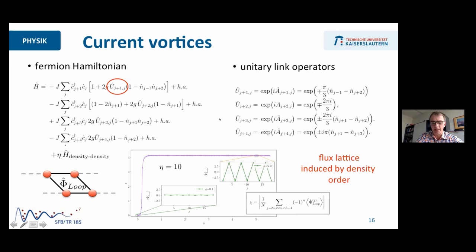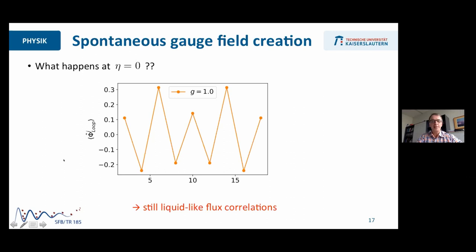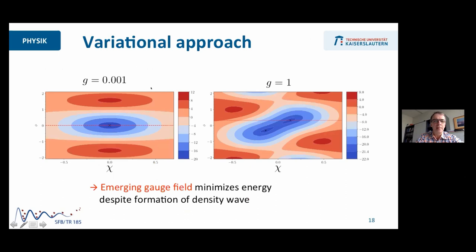Now you could ask the question, what happens if we artificially switch off this density-density interactions? So what happens if eta is equal to zero? The surprising thing is that we still observe a staggered magnetic flux in this lattice. So this means that this gauge field is actually spontaneously created. The reason for this spontaneous creation of the gauge field can be seen if you look at a simple variational Gutzwiller approach and calculate the ground state energy. It turns out that the generation of gauge fields, the emerging of these gauge fields, actually minimizes the energy, despite the fact that it forms density waves. Here we see that the density-dependent Peierls phases which you can get in these Rydberg systems can give rise to a spontaneous generation of gauge fields.